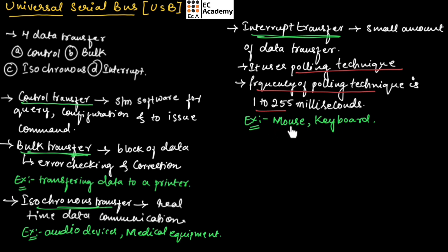Examples are mouse and keyboard, which transmit very small amounts of data. We can say mouse and keyboard use interrupt transfer.